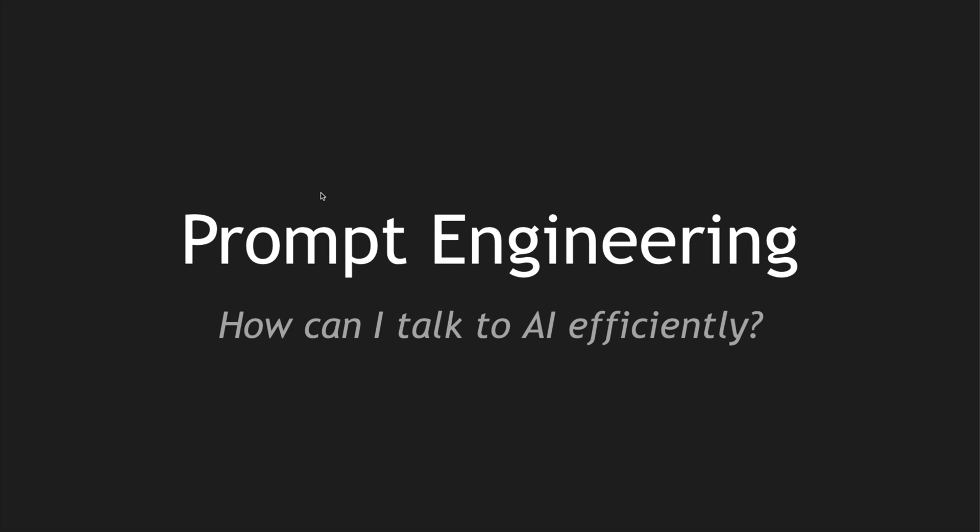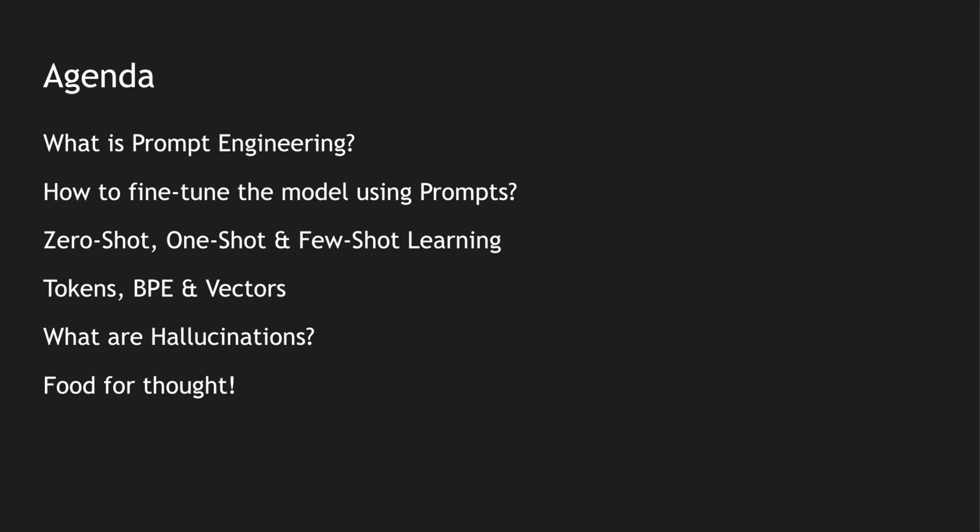In the previous video we saw what generative AI is and how we can use it to be more productive. In this video we are going to see how we can efficiently talk to an AI. There are a lot of AI tools these days — ChatGPT, Copilot, Gemini, etc. We need to master the art of talking to these AI applications, and this is where prompt engineering comes into picture. We will look at what is prompt engineering, how to fine-tune models using prompts, zero-shot learning, one-shot and few-shot learning.